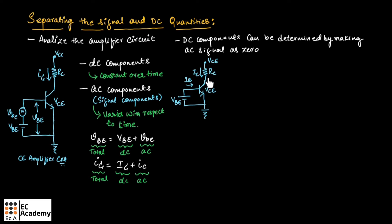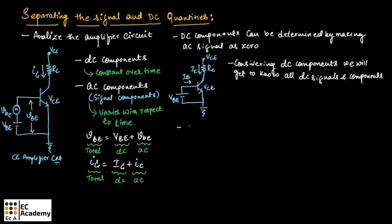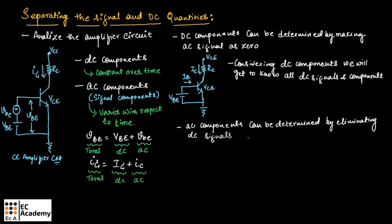From this circuit, we can easily identify IC, which is the collector current, the base current, as well as the collector and emitter currents, and the voltage between base and emitter, which are DC components. So by considering DC components, we will get to know all the DC signals and components present in the circuit. This figure shows all the DC current components with respect to the DC voltage VBE. Now, the AC components can be determined by eliminating the DC signals. To eliminate the DC signal, a DC voltage source will be replaced with a short circuit and a DC current source is replaced with an open circuit.